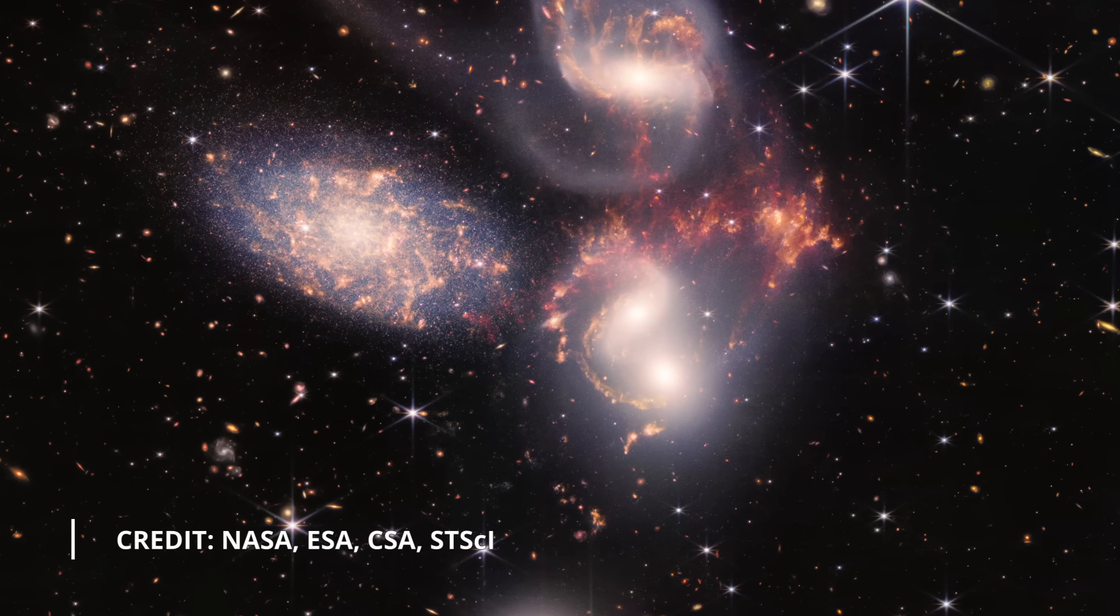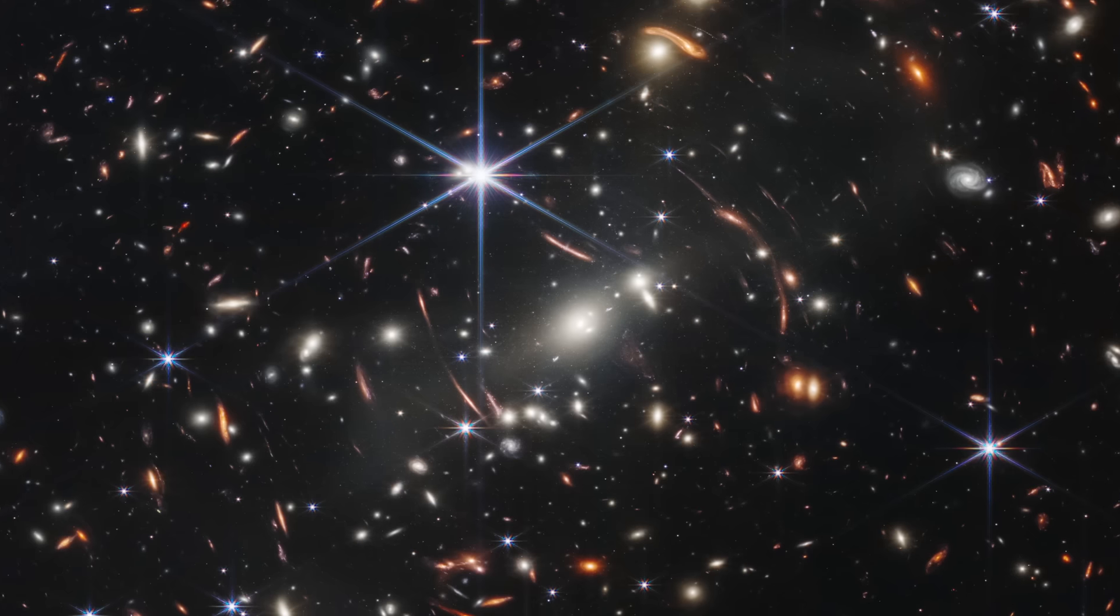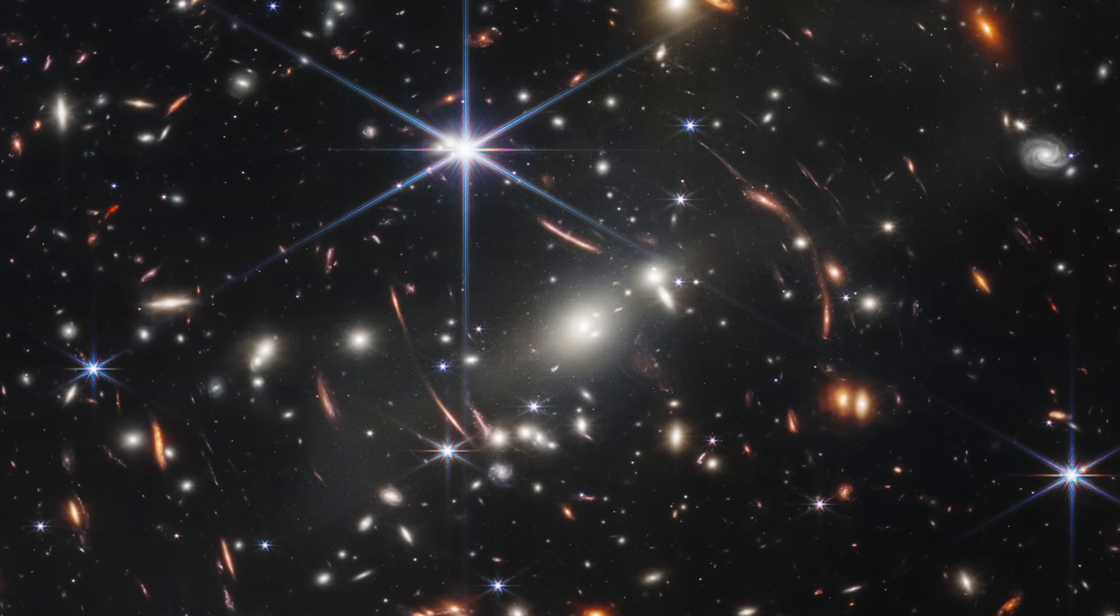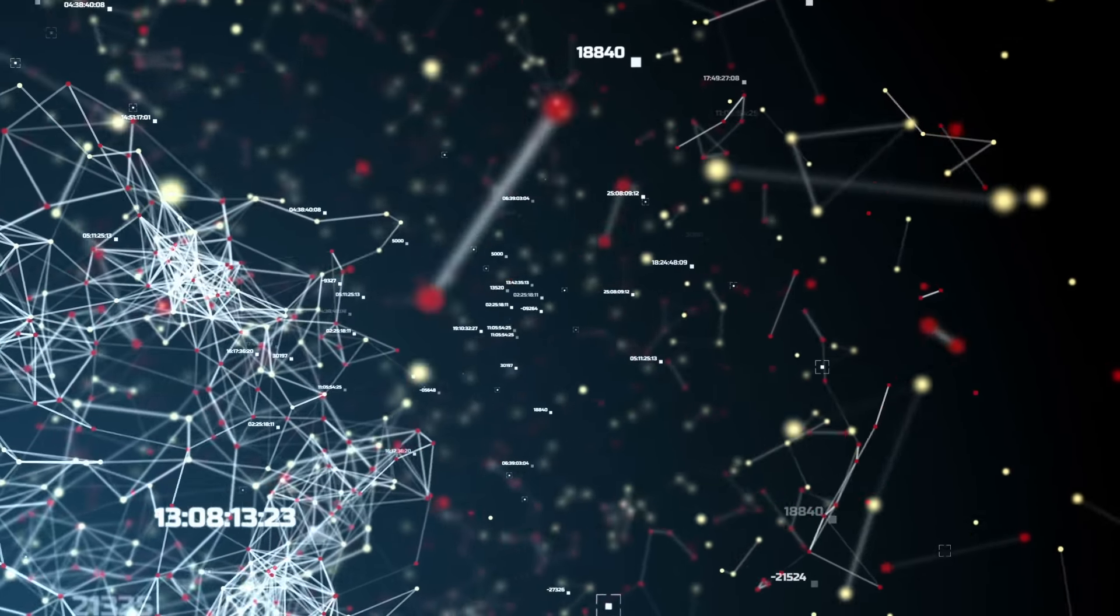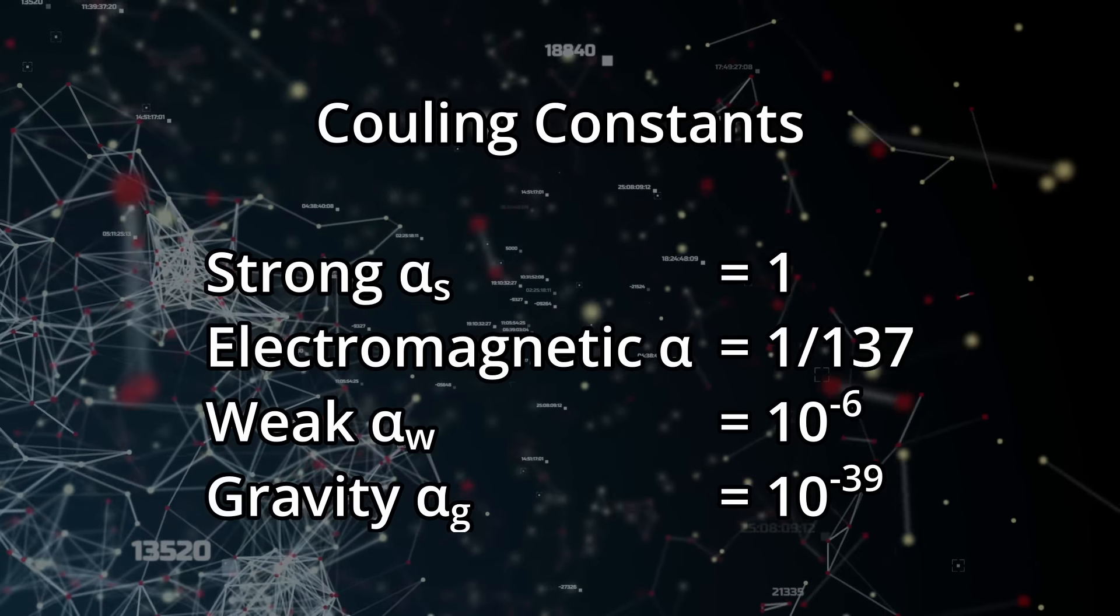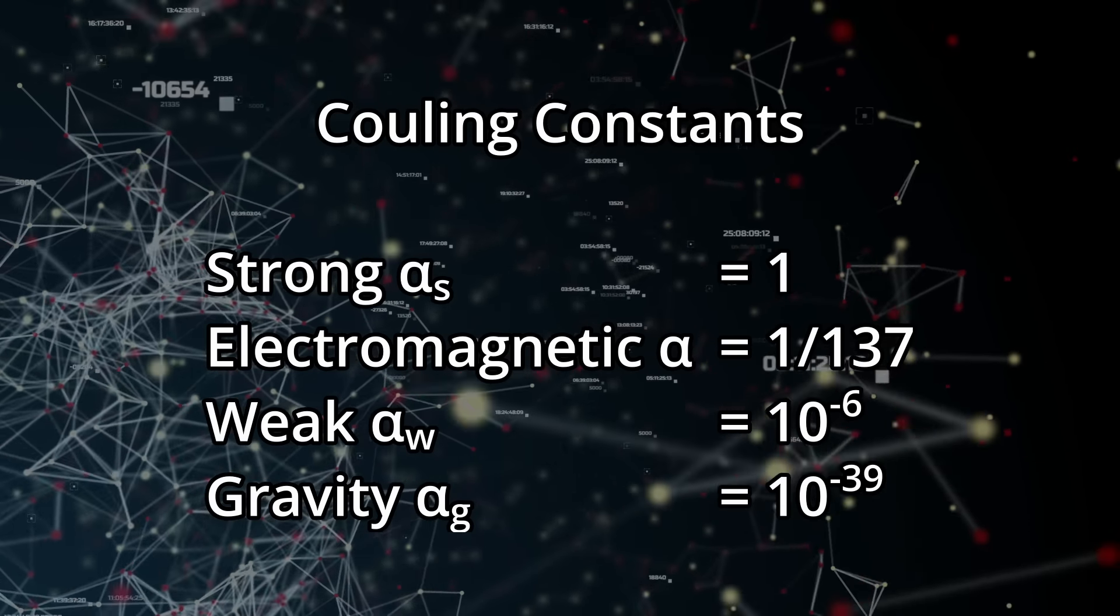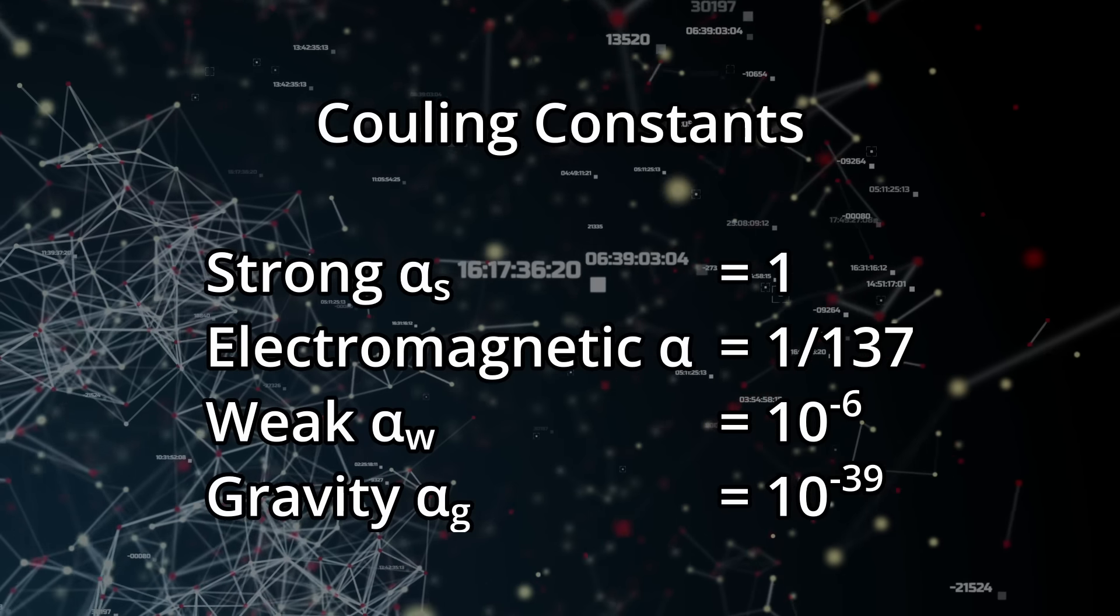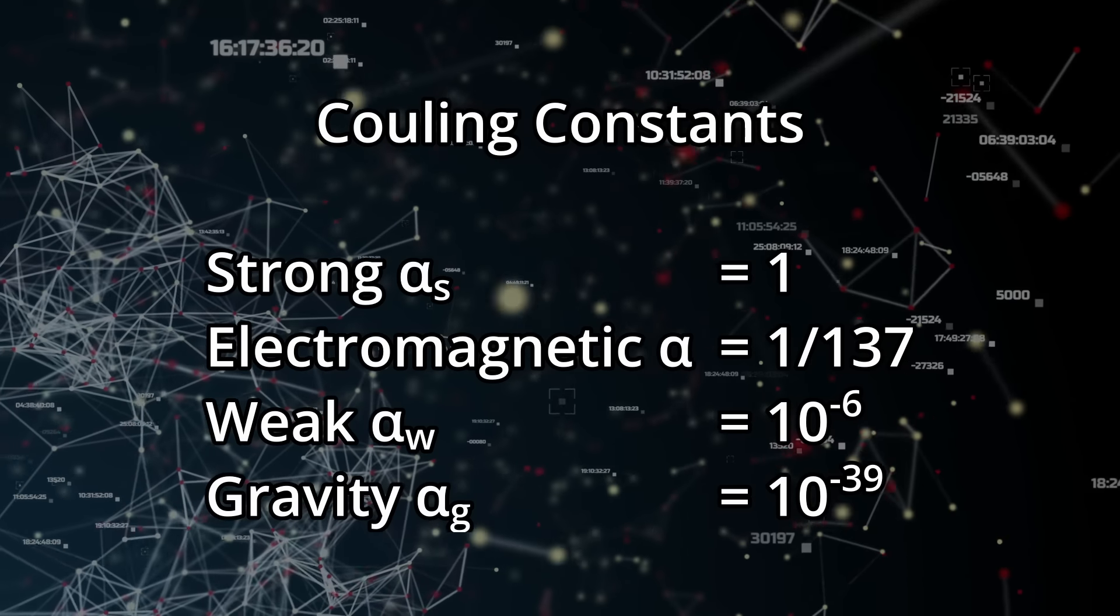The idea of varying fundamental constants has profound implications for our understanding of the universe. If proven true, it would challenge the notion of constants being truly constant, and could provide insights into the underlying structure of the universe. However, testing this idea experimentally is extremely challenging, and as of now, there is no conclusive evidence supporting such variations in fundamental constants.